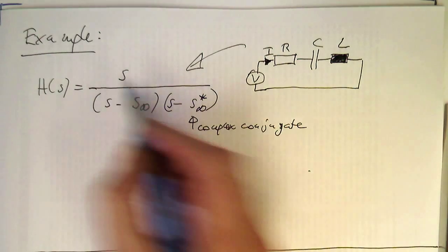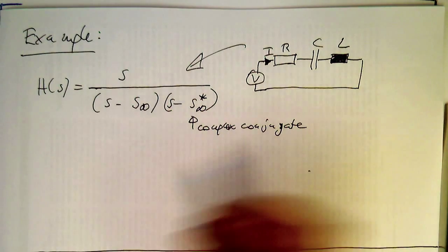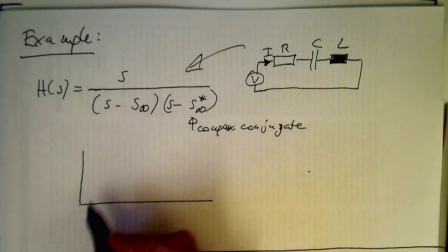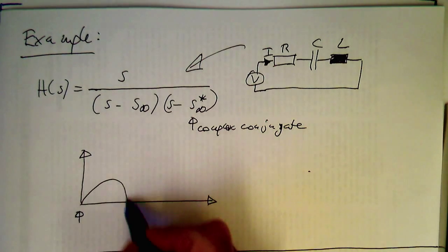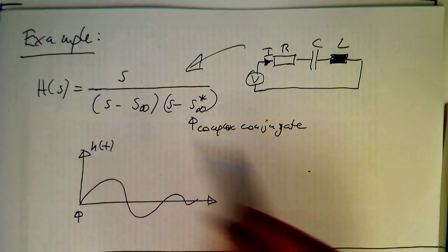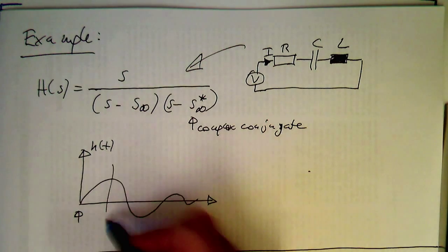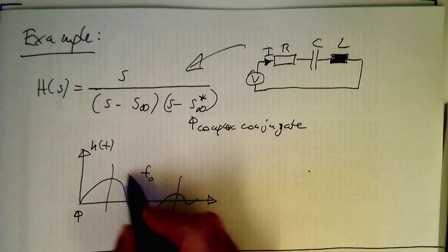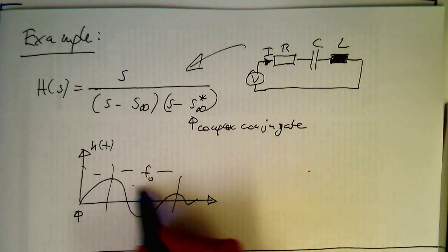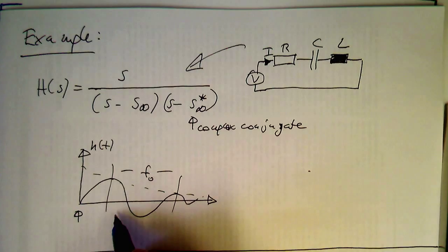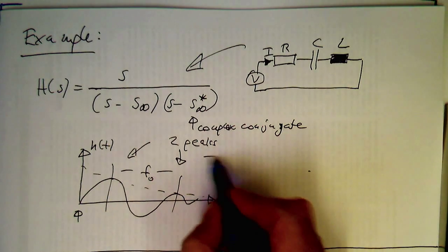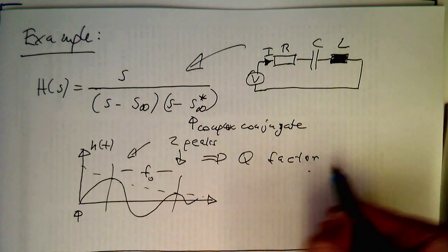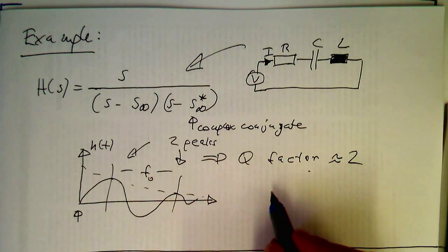So we have a circuit equivalent here. If we excite this circuit with a voltage, the impulse response H of T looks roughly like a decaying oscillation. We have a frequency F, let's call it F₀, and then we have a decay rate. The decay rate is usually defined by a Q factor. If we get two peaks, then the Q factor is roughly two.